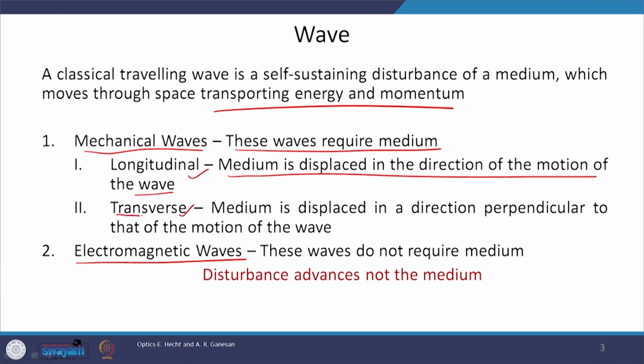The second kind is transverse waves. In transverse waves, the medium is displaced in a direction perpendicular to that of the motion of the wave. If you drop a pebble in water, it generates water waves; the surface wave makes the water move up and down while the wave propagates radially outward. A cork ball dropped on the water moves up and down — this is an example of a transverse mechanical wave.